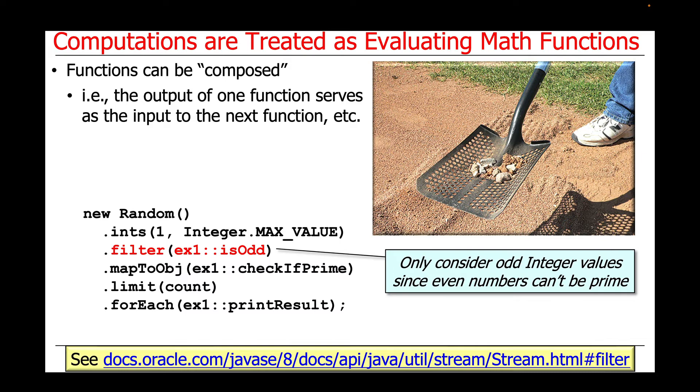In this case, we're going to be using the isOdd method reference to determine whether the value that was generated randomly is odd or even. If it's odd, we'll let it continue. If it's even, we're going to prevent it from continuing because, of course, even numbers couldn't possibly be prime.